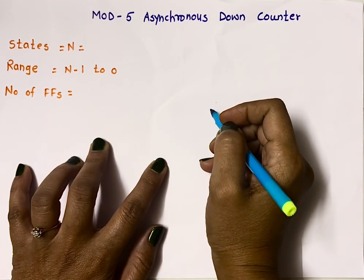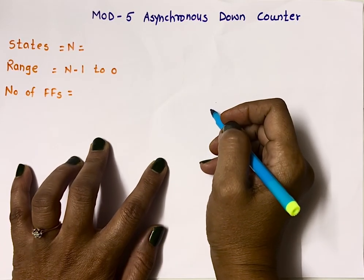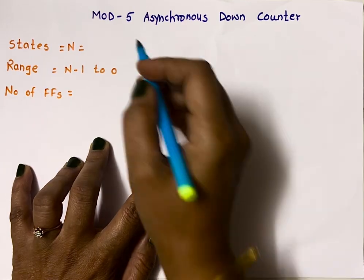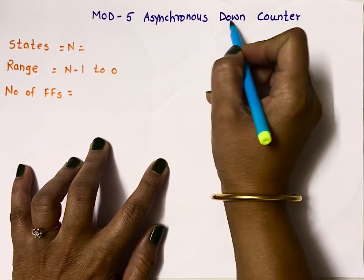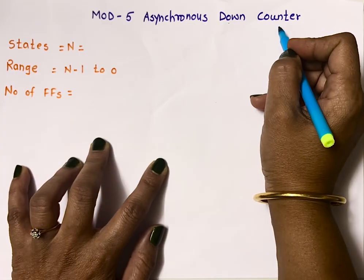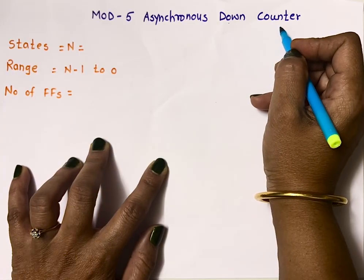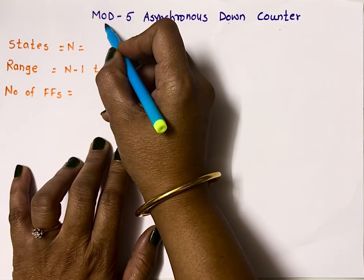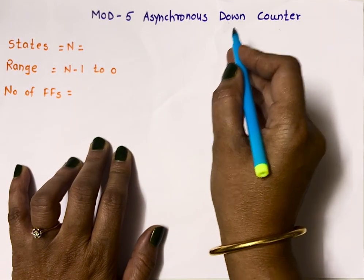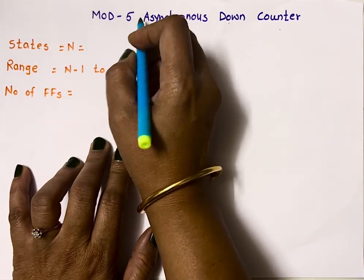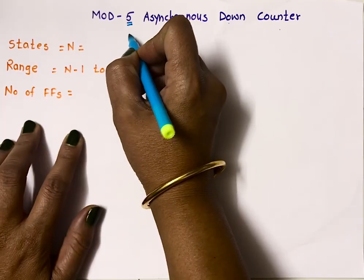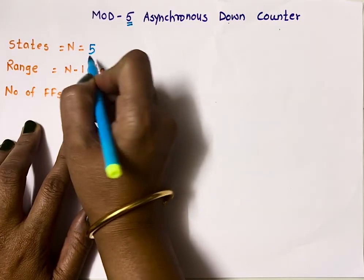Hello everyone, welcome back to my channel. In this video I'll tell you how to implement a mod-5 asynchronous down counter. A counter is a circuit which counts the number of clock pulses, and the modulus indicates how many clock pulses that counter will count. Here this counter will count a total of 5 clock pulses, so the number of states are 5.